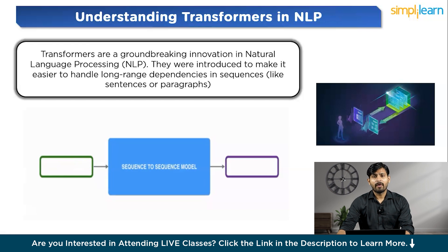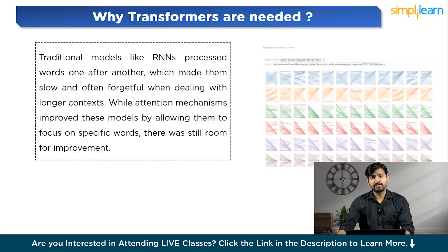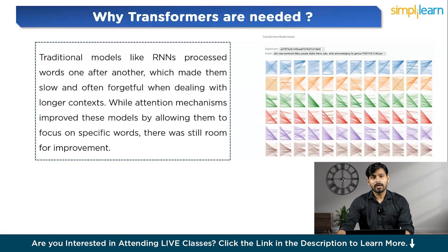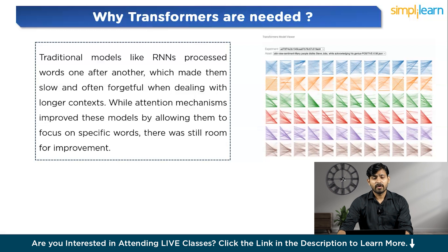You would be wondering why we need Transformers. Before Transformers, models struggled with long sentences or sequences. Traditional models like RNNs processed words one after another, which made them slow and often forgetful when dealing with longer context. While attention mechanisms improved these models by allowing them to focus on specific words, there was still room for improvement. Transformers solve this problem by completely relying on attention — specifically self-attention — and dropping the sequential processing of RNNs. This makes Transformers faster and more accurate for tasks like language translation, text summarization, and many more.